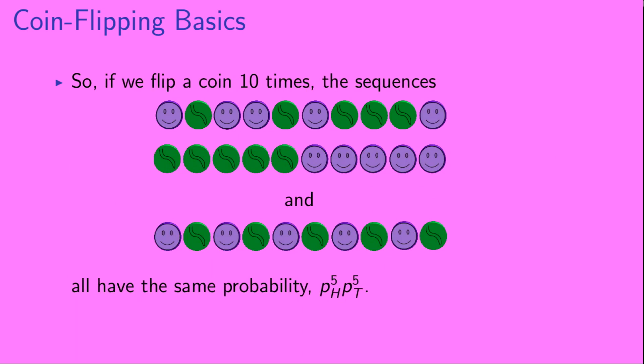So if we flip a coin 10 times, any sequence that has five coins coming up heads and five coins coming up tails will all have the same probability, pH to the fifth, PT to the fifth. And that includes the perhaps unlikely seeming combination of having five coins in a row come up tails followed by five coins in a row come up heads.